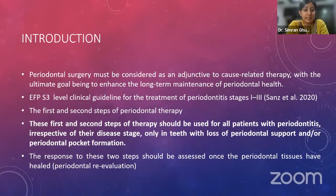The European Federation of Periodontology recently came up with level guidelines for the treatment of periodontitis stages one to three in the year 2020. They recommend that patients once diagnosed should be treated according to a pre-established stepwise approach to therapy that, depending on the disease stage, should be incremental and each step including different interventions.